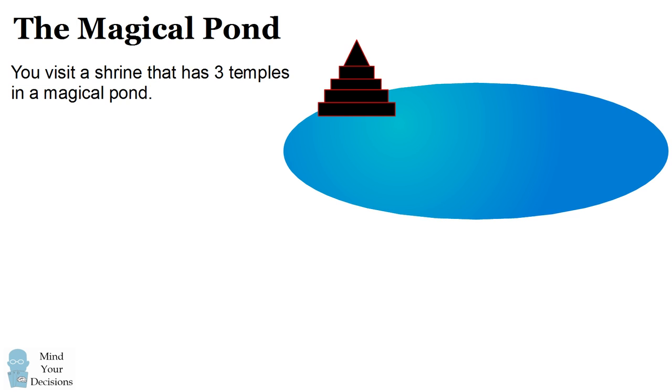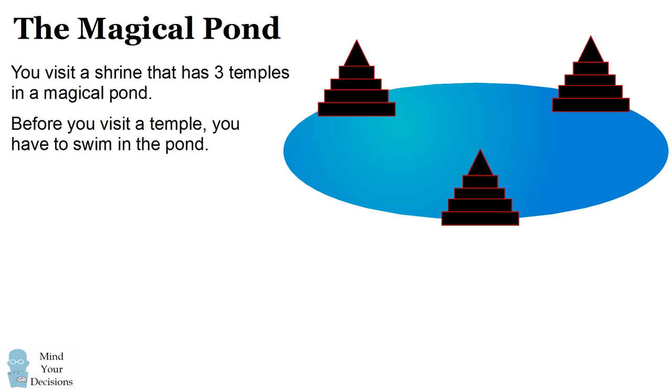Hey, this is Presh Talwalkar. You visit a shrine that has three temples in a magical pond. Before you visit a temple, you have to swim in the pond. The path you take involves swimming in the pond to get to the first temple, swimming in the pond to get to the second temple, and then swimming in the pond to get to the third temple.